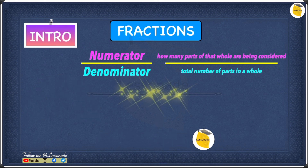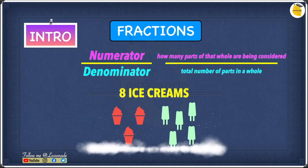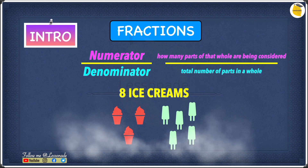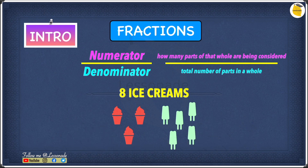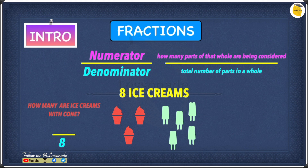Let's say someone gave you 8 ice creams and asked you to find the fraction for each type. We have 3 ice creams with cones and 5 ice lollies. For the first question — how many are ice creams with cones — we have 8 ice creams total, so the denominator is 8, and 3 of them are cone ice creams, giving us a fraction of 3 over 8.